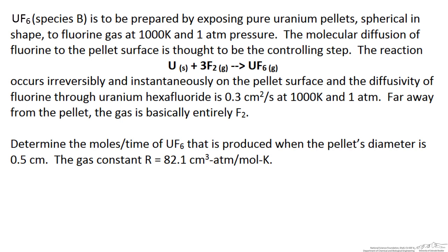Far away from the pellet the gas is basically entirely fluorine. For this problem we want to determine the moles per time — the production rate of uranium hexafluoride — when the pellet diameter is 0.5 cm. We are given a gas constant value that we may use.